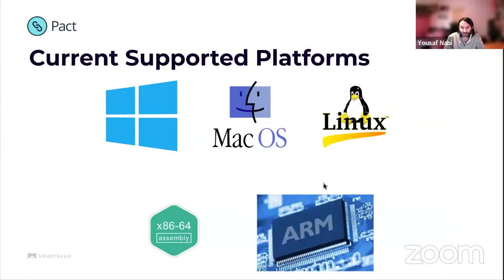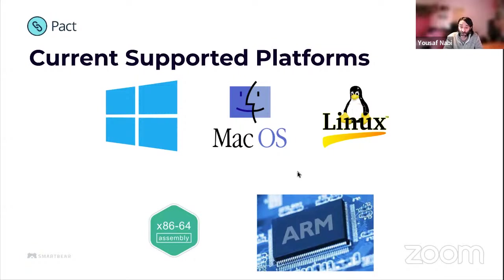Our currently supported platforms aim to cover Windows, macOS, and Linux. When PAC was initially started in 2013 it was mainly x86-64 Intel processors, with some 32-bit. 32-bit has been phased out and there's been a big rise in ARM processors, both from Raspberry Pis, Apple Silicon, and cheaper cloud providers like AWS Graviton. So ideally as PAC reference implementations, we support Windows, macOS, and Linux, covering both Intel x86-64 and ARM64.